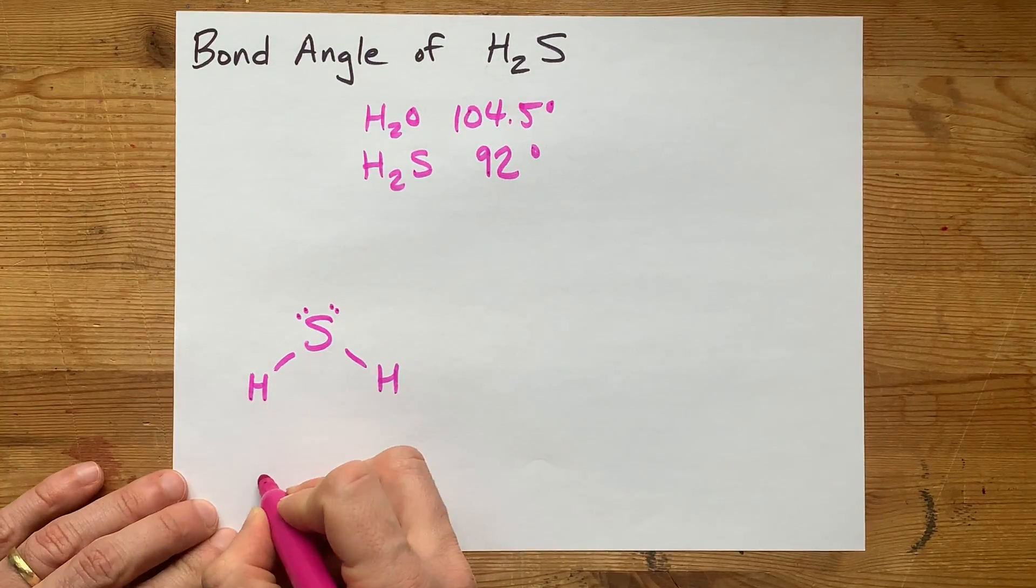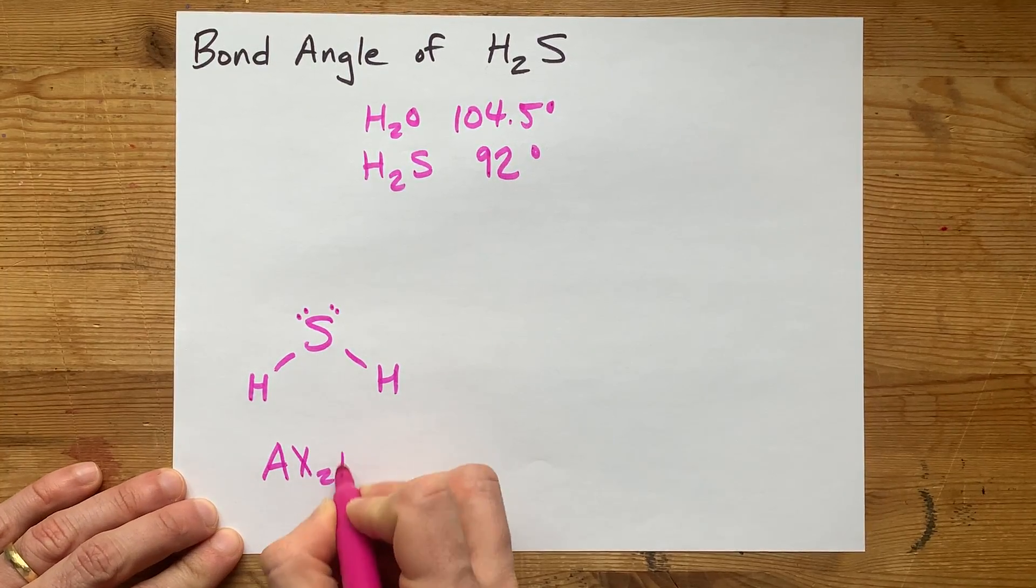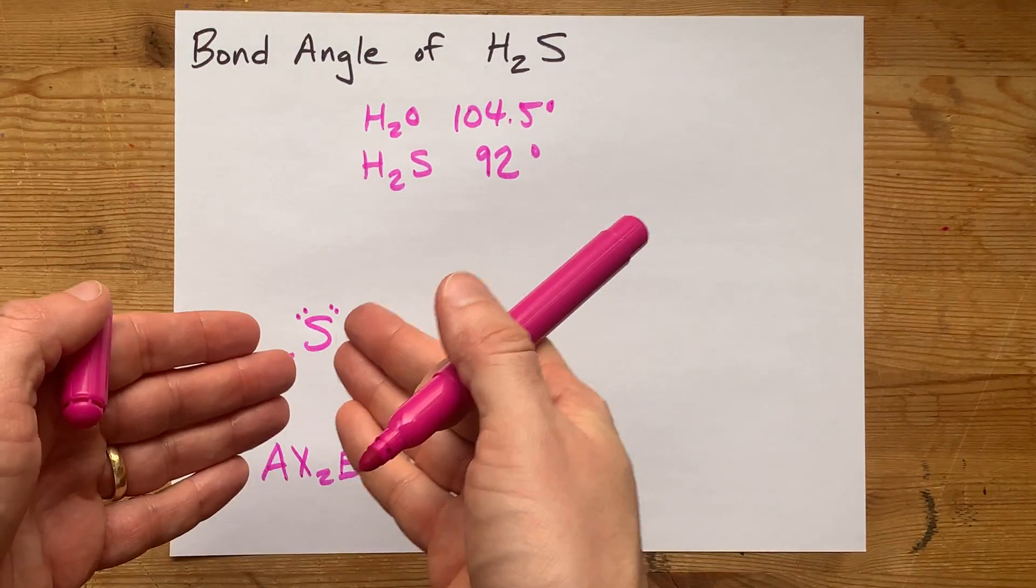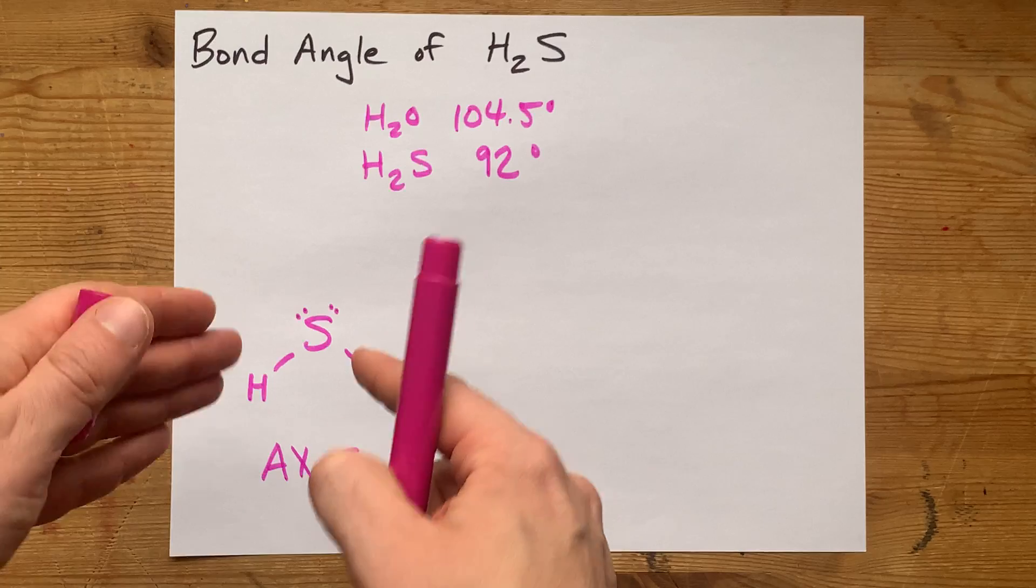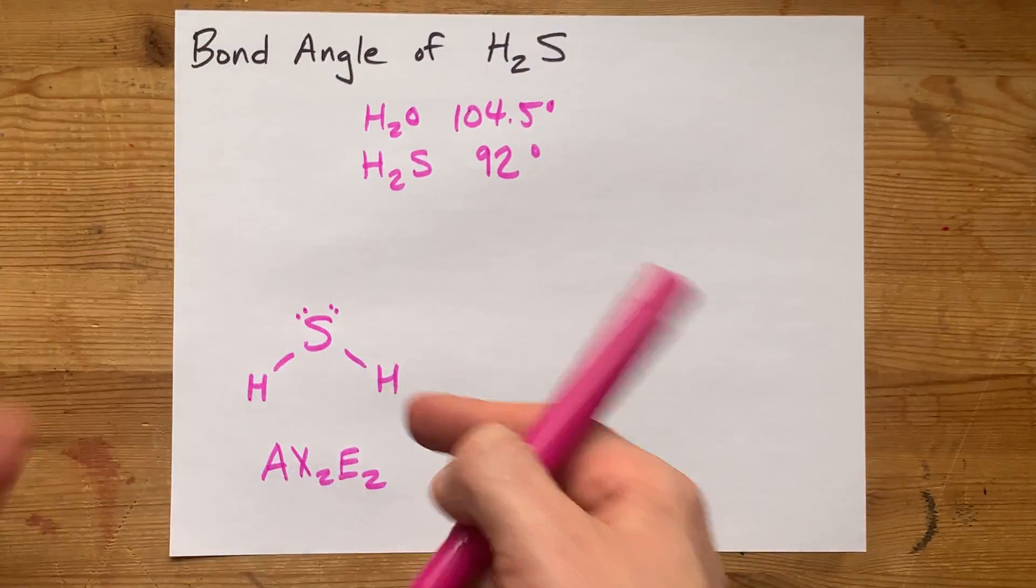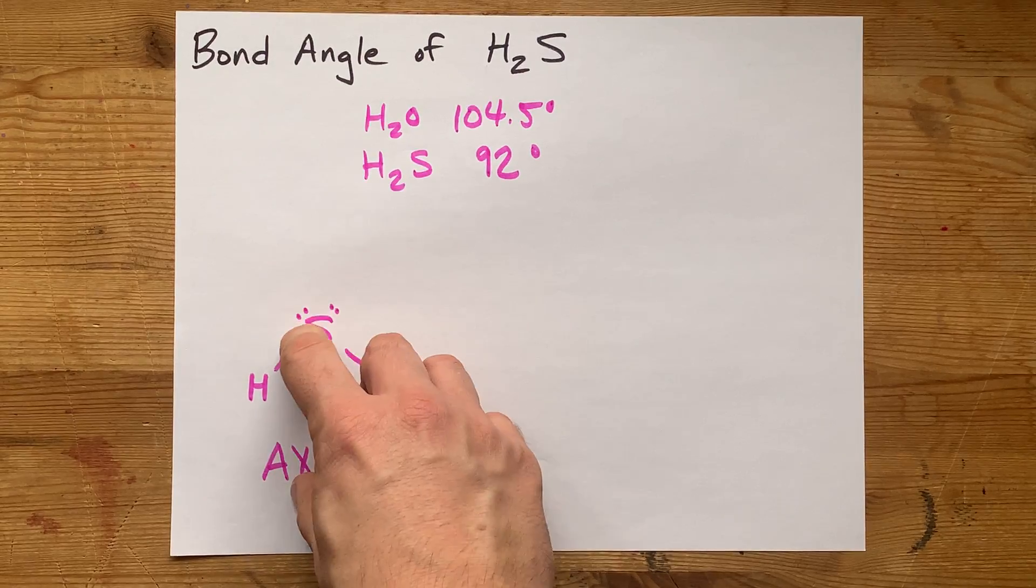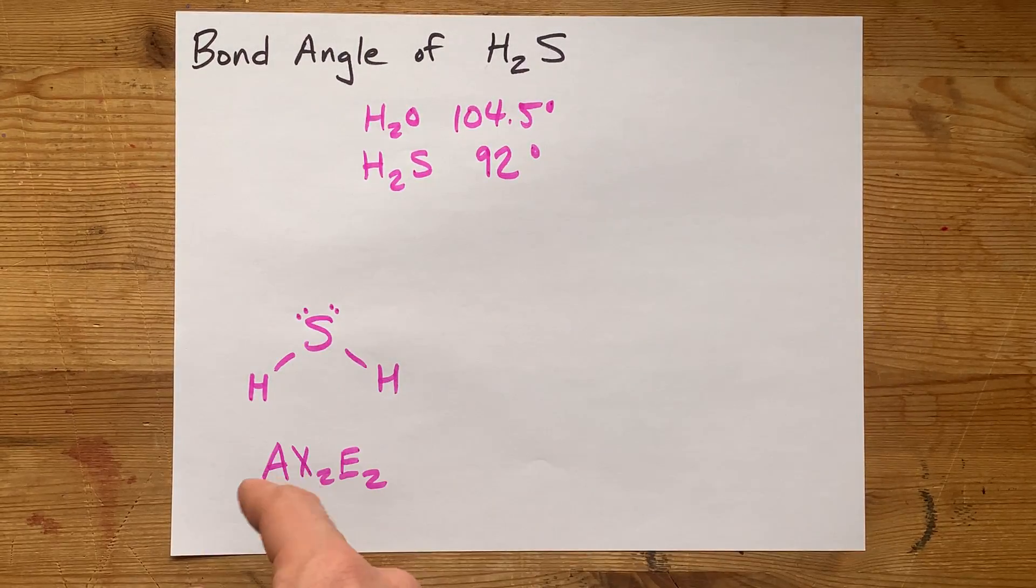According to VSEPR, this AX2E2 geometry is roughly tetrahedral, thinking about the lone pairs also counting towards the geometry. You've got one, two, three, four things around the sulfur.